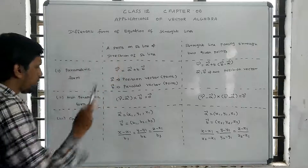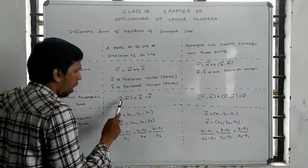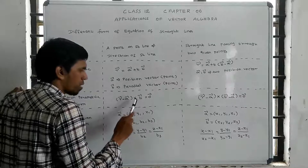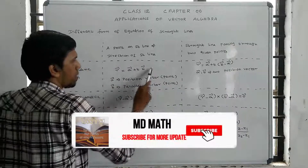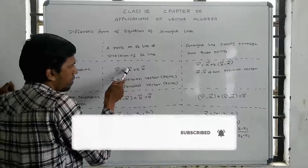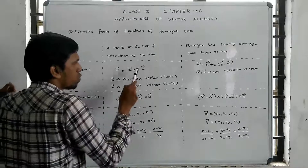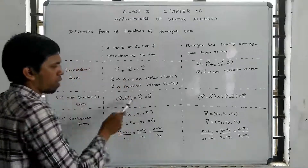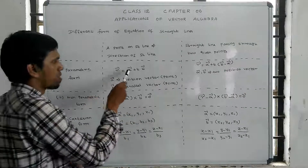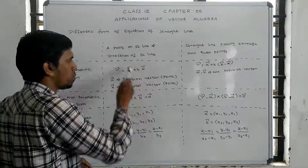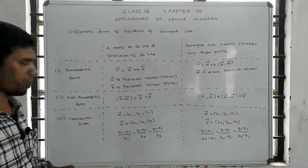The non-parametric form is: R vector minus A vector cross B vector equals zero vector. This is derived from the parametric form by removing T, giving us (R vector minus A vector) cross B vector equals zero vector.